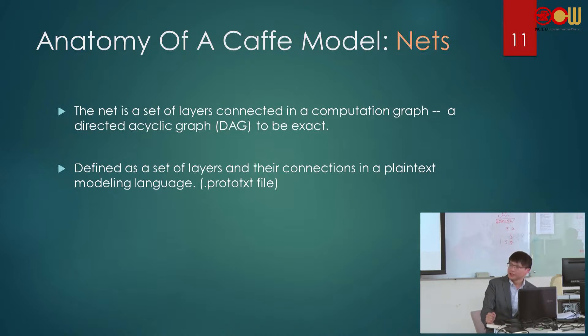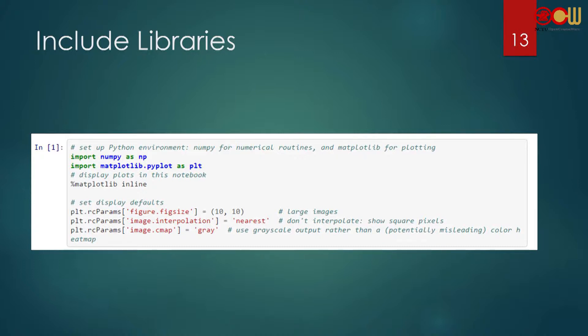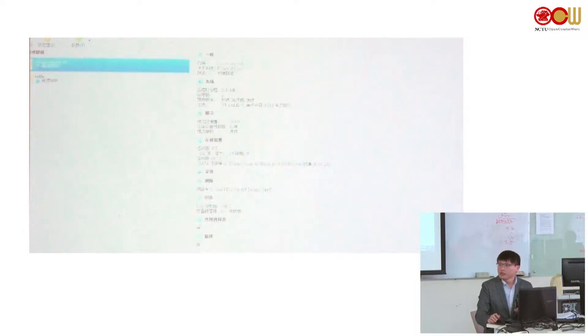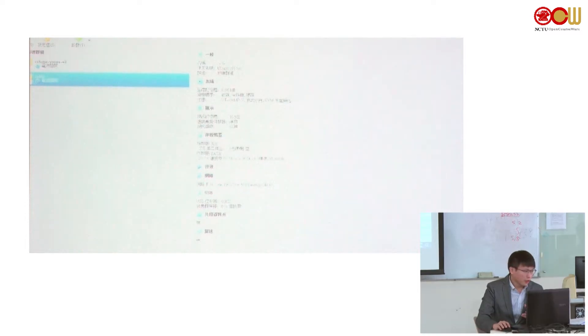Now please open your VirtualBox. If you have set up the VDI file named 'Caffe', it's a Linux Ubuntu 64-bit image. Name it Caffe 1, and we recommend setting the RAM to about 4 gigabytes. Then use the VDI file to import, open VirtualBox, and start the Ubuntu 16.04 image.